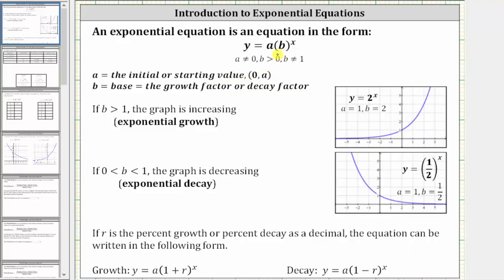B is the base, which is also called the growth factor or decay factor. If the base b is greater than one, the graph is increasing and we have exponential growth. Here we see the graph of y equals two raised to the power of x, where a is equal to one and b is equal to two. Since two is greater than one, we have exponential growth. Notice how the graph goes uphill from left to right.